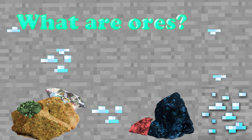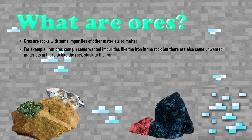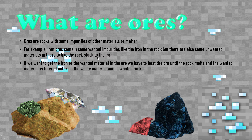What are ores? Ores are rocks with some impurities or other materials or matter. For example, iron ore contains some unwanted impurities like the iron in the rock, but there are also some unwanted materials in there too, like the rock stuck to the iron. If we want to get the iron or the wanted material — like gold or lapis lazuli — trapped in the rock, we have to heat the ores until the rock melts, and the melted material is filtered out from the waste material and unwanted rock.